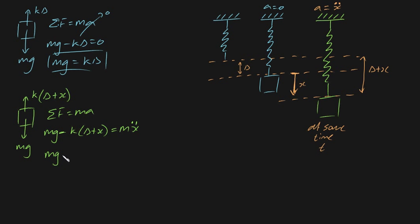If we expand the brackets, we're left with mg minus k delta minus kx is equal to mx double dot. Now, if we substitute k delta in here, we're left with mg minus mg minus kx is equal to mx double dot.